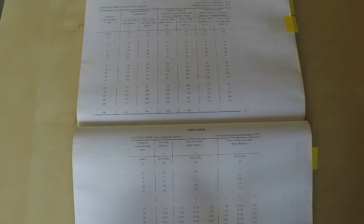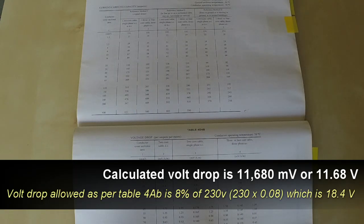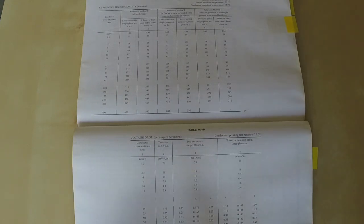If you go back to page 338, the volt drop allowed at 230 volts for all other uses other than lights is 8%, which is 18.4 volts. You can see our 11.68 volt drop is within the parameter of 18.4, so that is okay.